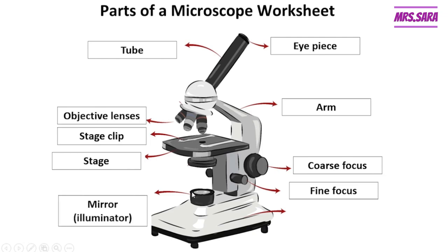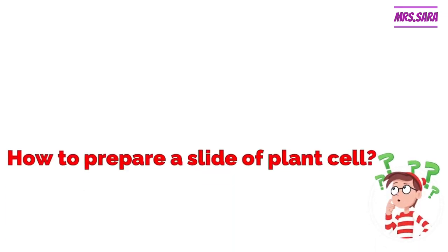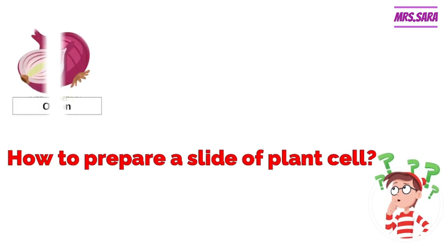This part, Primary Six, is called the mirror or illuminator, and the last part is called the base. To see cells under the microscope, like Robert Hooke, we need to prepare a slide. But how do we prepare a slide? Let's use a plant cell as an example.